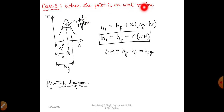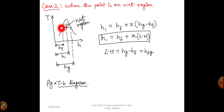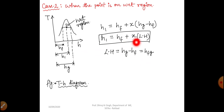Case 2: When the point is in the wet region. Using the specific volume of mixture formula, the enthalpy at point 1 in the wet region is: H1 = HF + x·(HG − HF), where HG − HF is the latent heat. So H1 = HF + x·LH, and the latent heat can also be written as HFG.